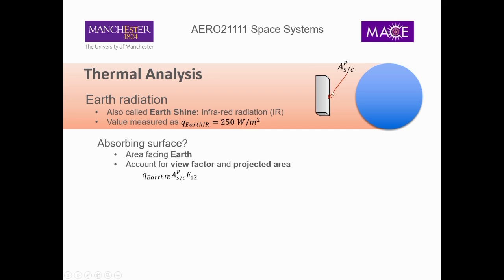Only the face looking at the Earth is going to absorb the infrared radiation. Just like with albedo — which was reflected solar radiation hitting our spacecraft — we're dealing with the Earth again. So we think about the projected area facing the Earth and the view factor we may have to take into account as our spacecraft moves away from Earth, considering how much of that radiation leaving the surface actually hits the spacecraft surface. Those are two terms we covered in albedo, and we need to take them into account for Earth IR as well.